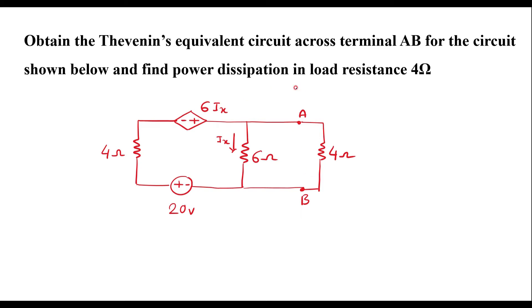We have to find the power dissipation in load resistance 4 ohm. Since this circuit consists of a dependent source — here we have a current dependent voltage source — it is dependent on current Ix, where current Ix flows through the 6 ohm resistor. If the circuit consists of a dependent source, we need to calculate three parameters: Thevenin's voltage Vth (also known as open circuit voltage VOC), short circuit current ISC, and Thevenin's resistance Rth. We need to calculate these three parameters to get the Thevenin's equivalent circuit.